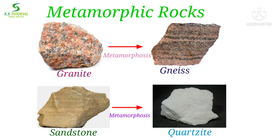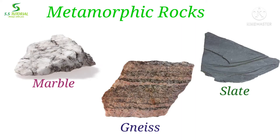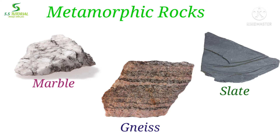Metamorphic rocks are nothing but a type of rocks which are formed due to metamorphosis of existing rocks. That means when igneous rocks, sedimentary rocks, and even low-grade metamorphic rocks change into new rocks due to intense heat and pressure, they are called metamorphic rocks. Rocks like marble, gneiss, and slate are examples of metamorphic rocks.